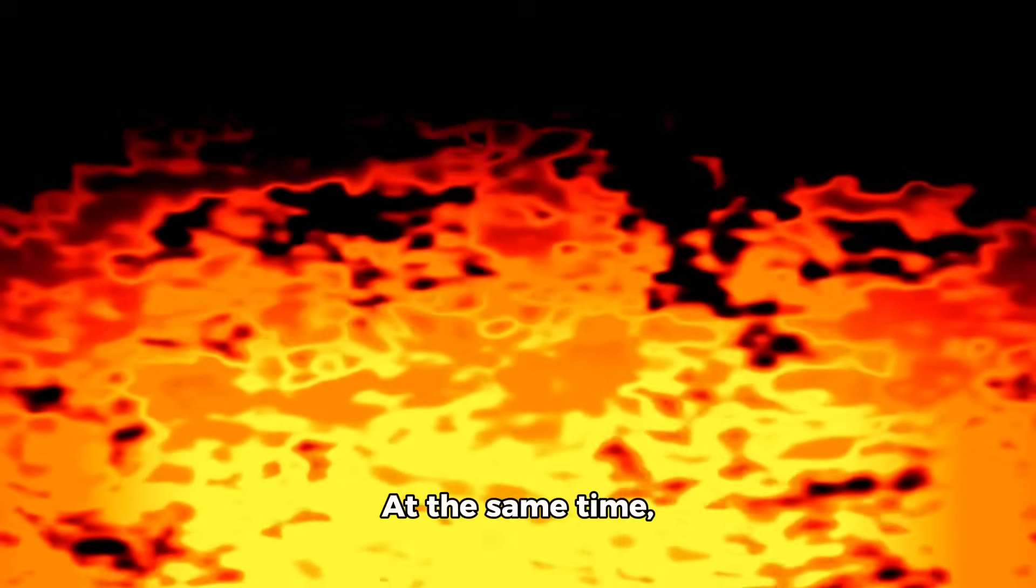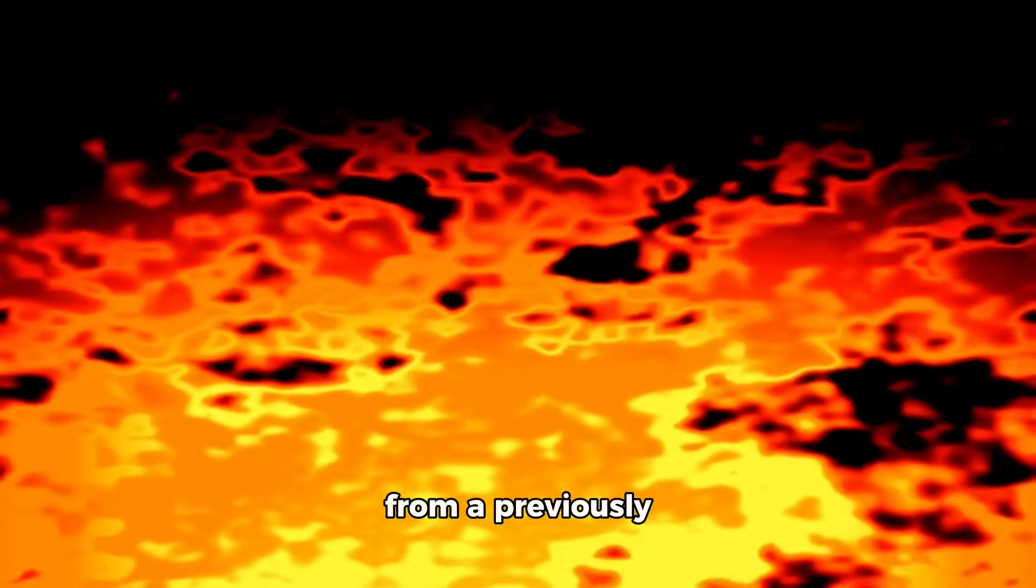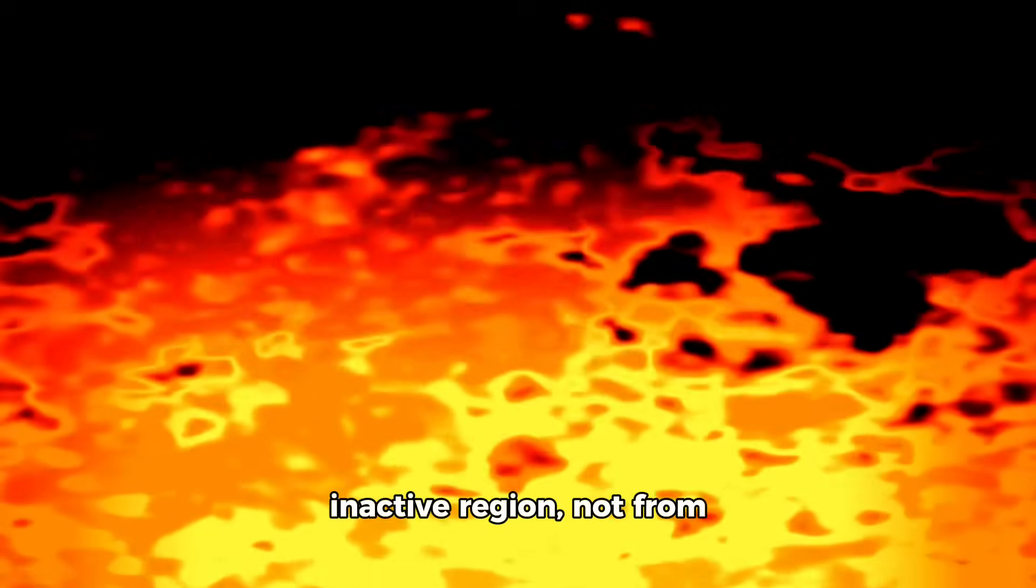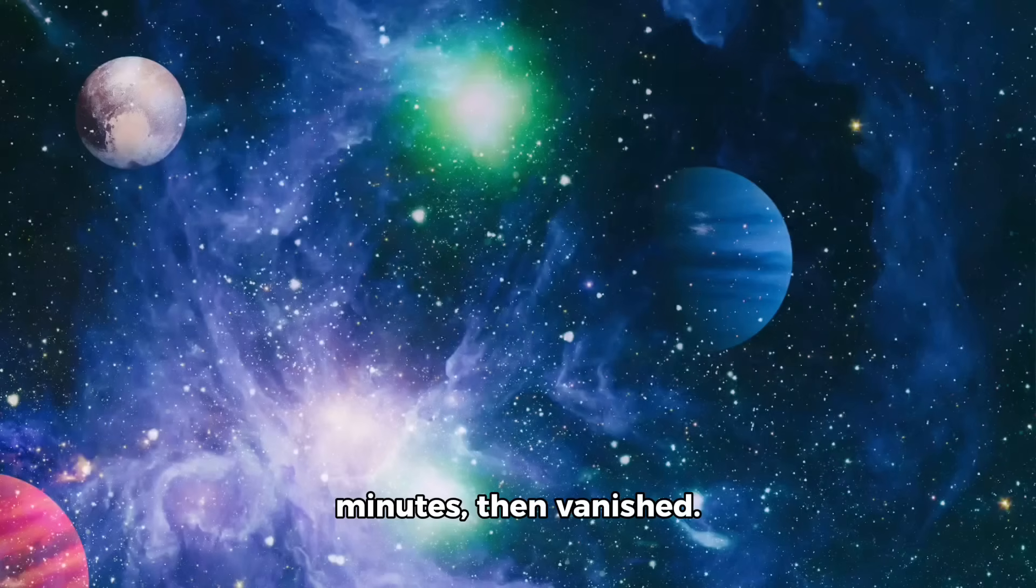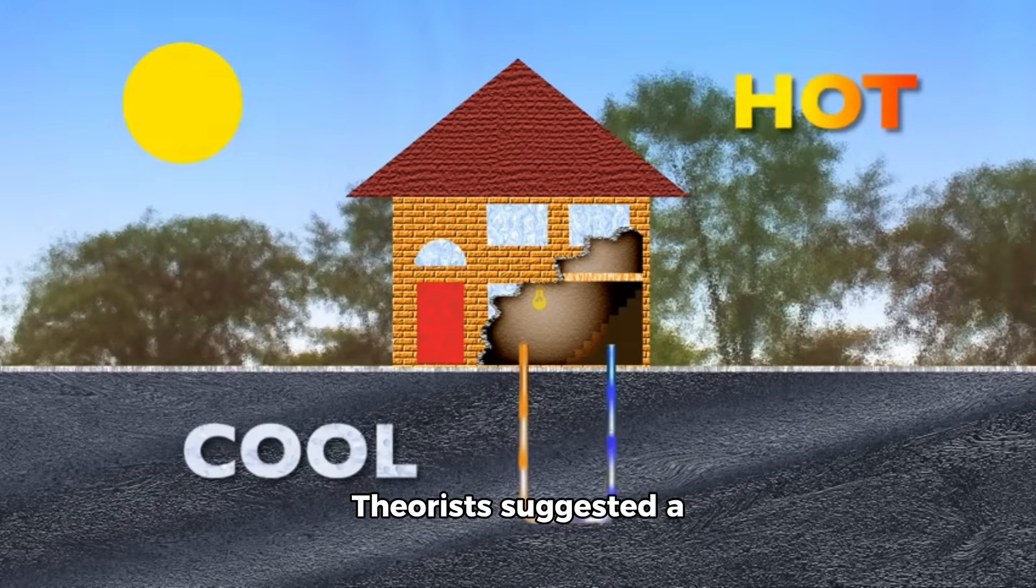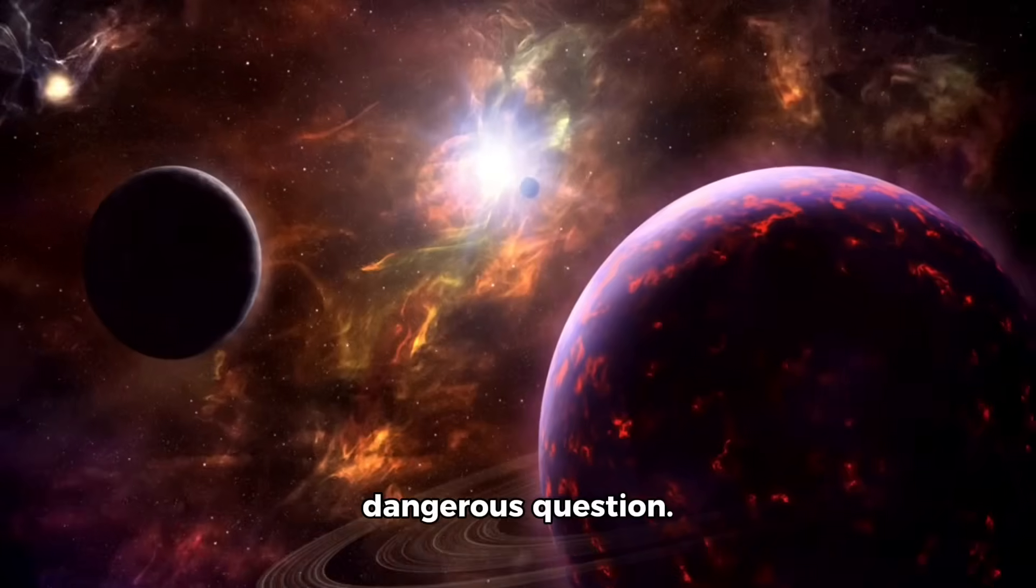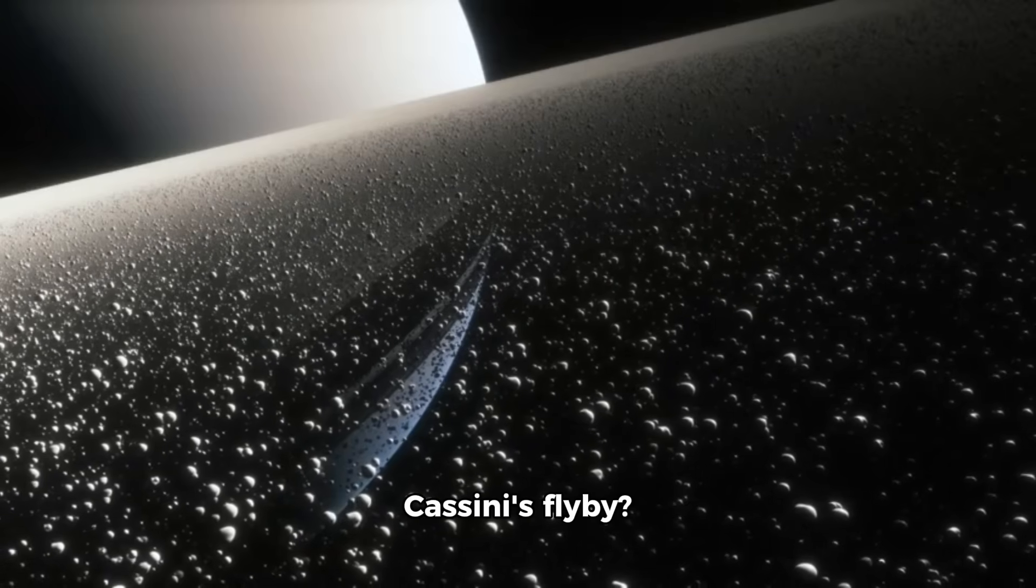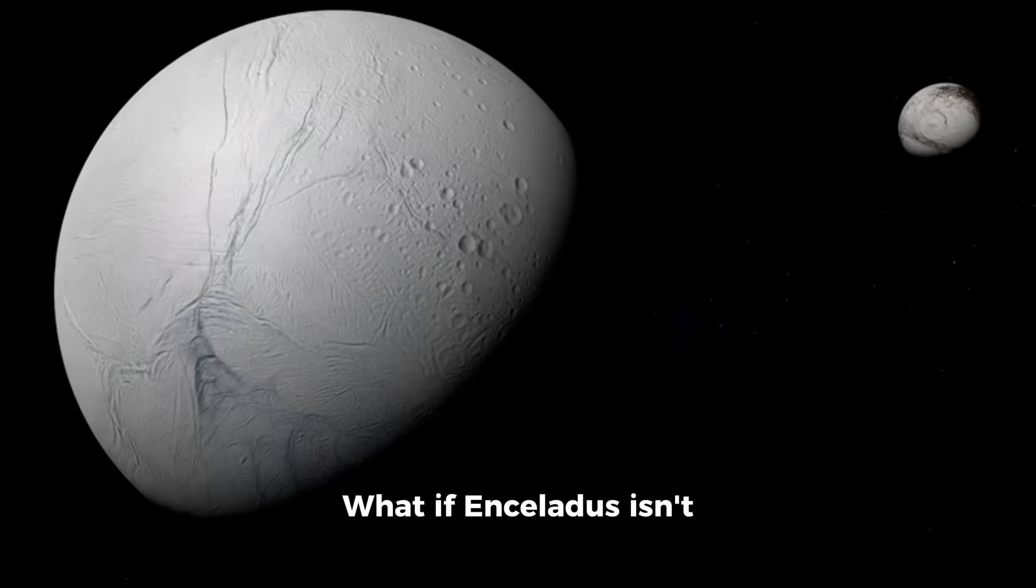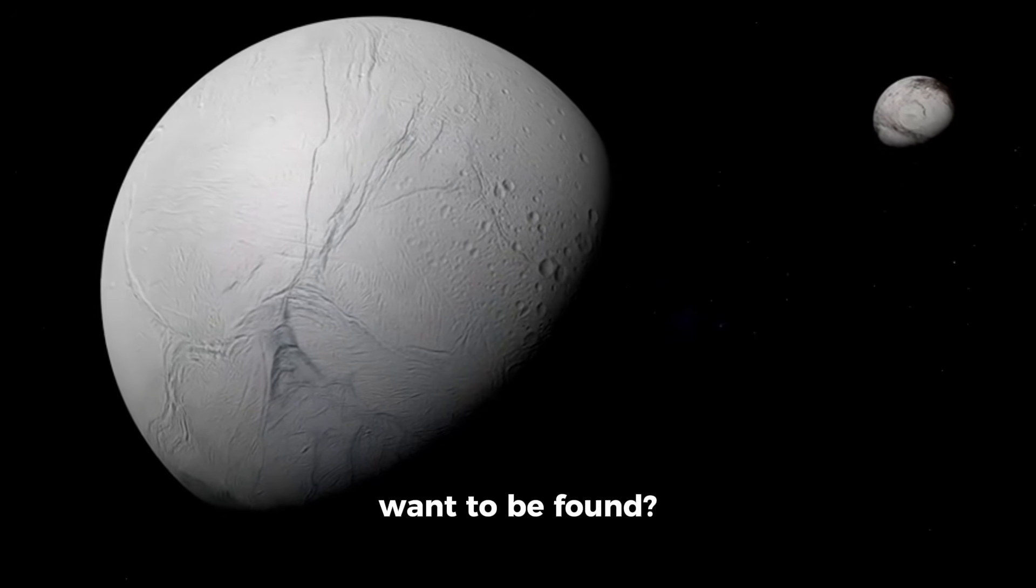At the same time, infrared imaging recorded a sudden spike in heat from a previously inactive region, not from a plume but from a smooth area of surface ice. It lasted 12 minutes, then vanished. Theorists suggested a deep internal heat vent, but others asked a more dangerous question. What if something under the surface was aware of Cassini's flyby? What if Enceladus isn't just hiding water, but something that didn't want to be found?